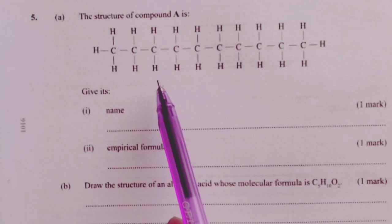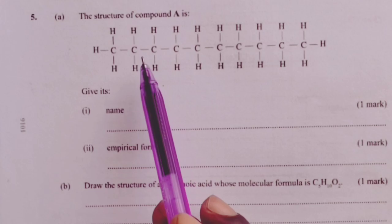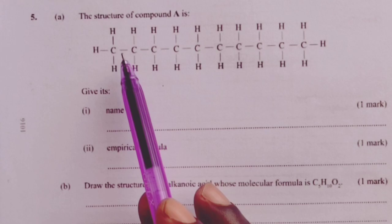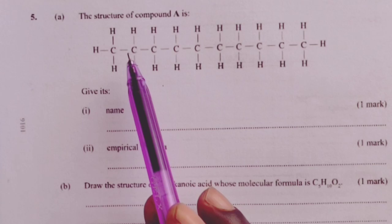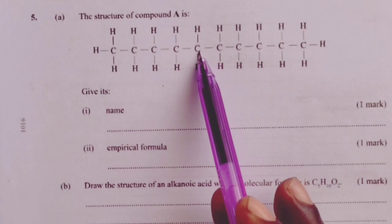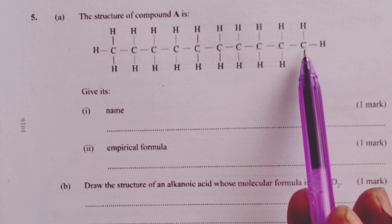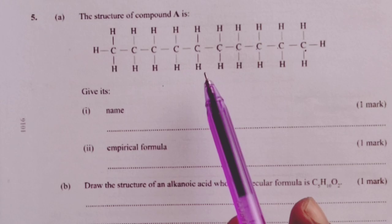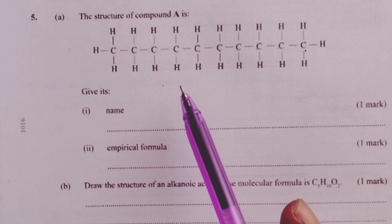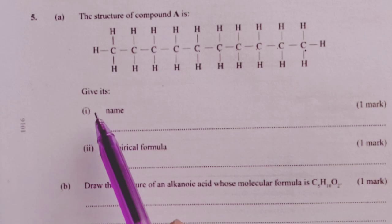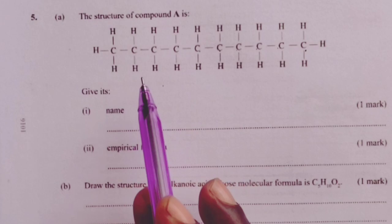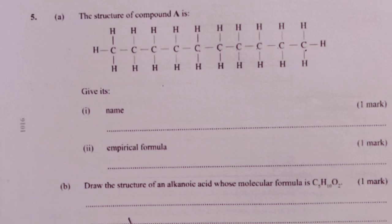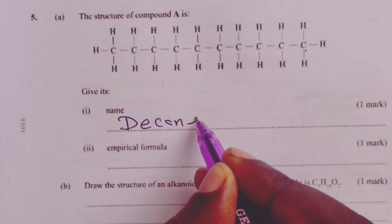In question 5 part A, we are told that the structure of compound A is as drawn here. A candidate is supposed to realize that this compound is actually an alkane because the carbon atoms are linked to one another via single covalent bonds. We have a total of 10 carbon atoms and we are supposed to have a total of 22 hydrogens. That makes it an alkane with 10 carbons and for that matter we call these decane. The name becomes decane for one mark.